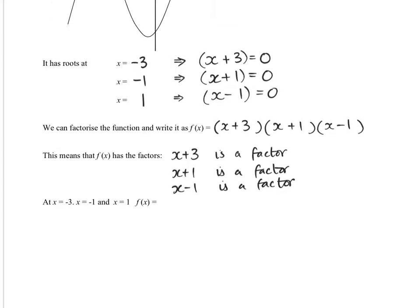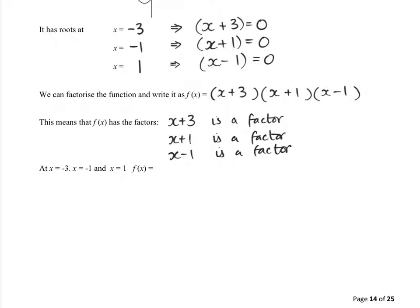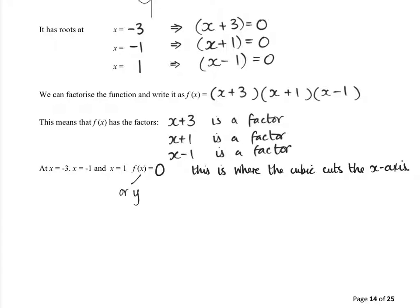That allows us to be able to write down equations of any cubics or quadratics that we come across. This means that x plus 3 is a factor, as is x plus 1, and also x minus 1. And that says to us then that at these roots - at these points where x is minus 3, minus 1, and 1 - f of x, which is also y, equals 0. That's what you get. So this is where the cubic cuts the x-axis.